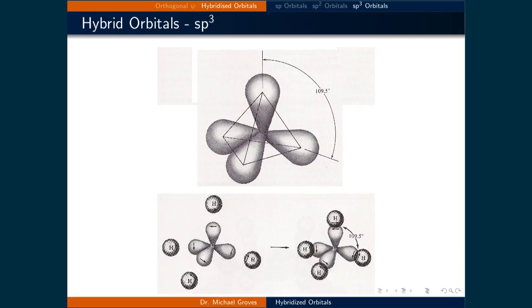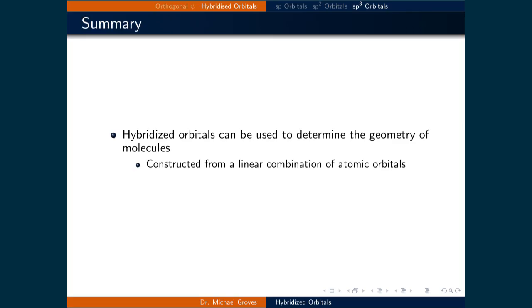Here is an image of methane, which illustrates the geometry predicted for sp3 hybridized orbitals. We've always been told that the angle between sp3 hybridized orbitals is 109.5 degrees. By solving the coefficients for two sp3 hybridized orbitals, we've demonstrated that this angle is no accident according to quantum mechanics. This lecture examined hybridized orbitals using normalization, orthogonality conditions, and geometric arguments to justify Lewis structures and provide a theoretical basis for VSEPR rules.